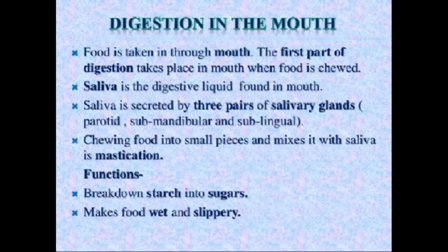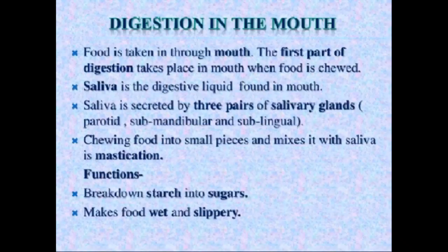First is digestion in the mouth. We take in food through the mouth. The first part of digestion takes place in the mouth — to some extent it happens right there when you chew your food. In your mouth, saliva is present — it is a digestive liquid. The enzyme in saliva is called salivary amylase.